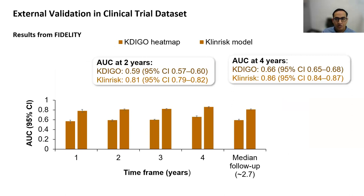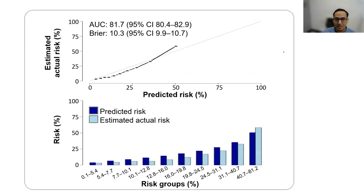In Fidelity, we showed the same thing as in Canvas and Credence, with remarkably large AUC differences: 0.66 versus 0.86, and 0.59 versus 0.81 — comparing GFR-ACR alone versus our model. The high-risk group in Fidelity has a 40% to 80% risk of progression, and the low-risk group has 0.1% to 10% risk. Everybody benefits from finarenone, but the benefit is spread across the entire risk continuum.